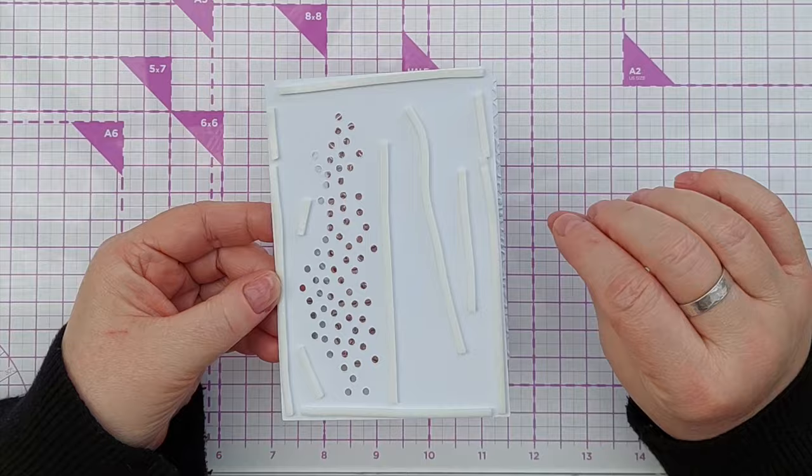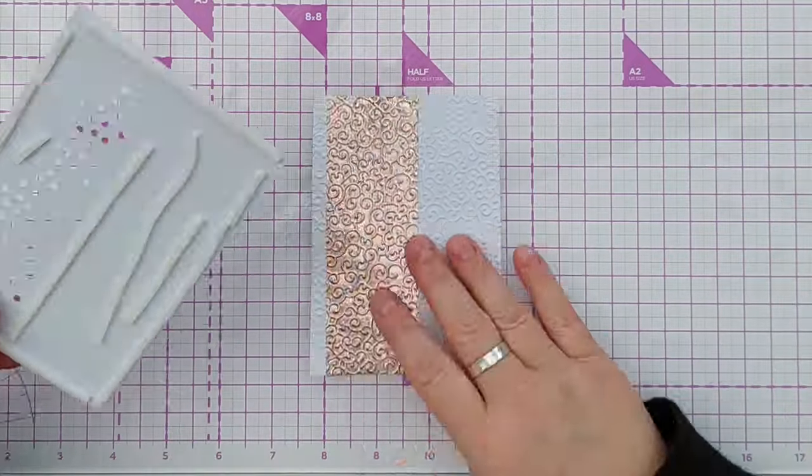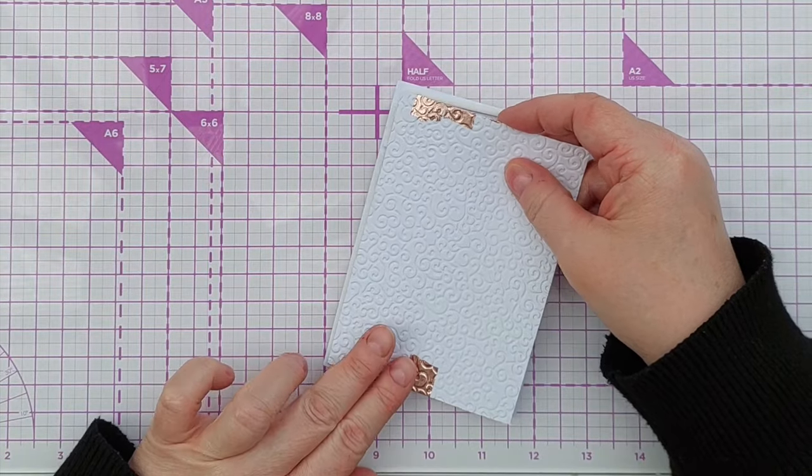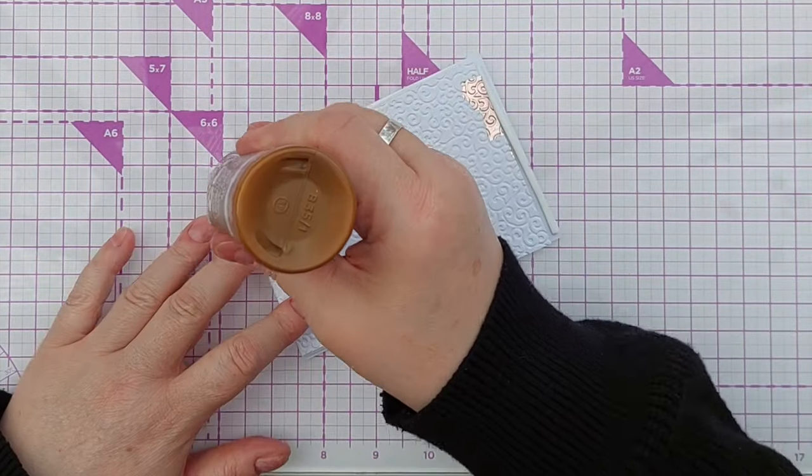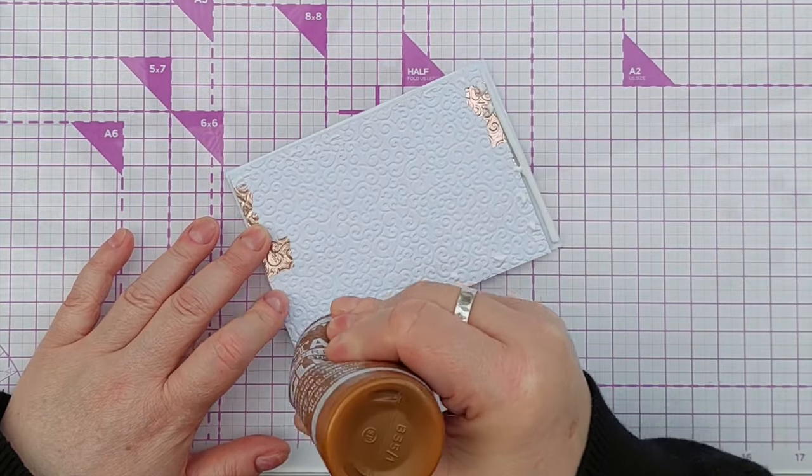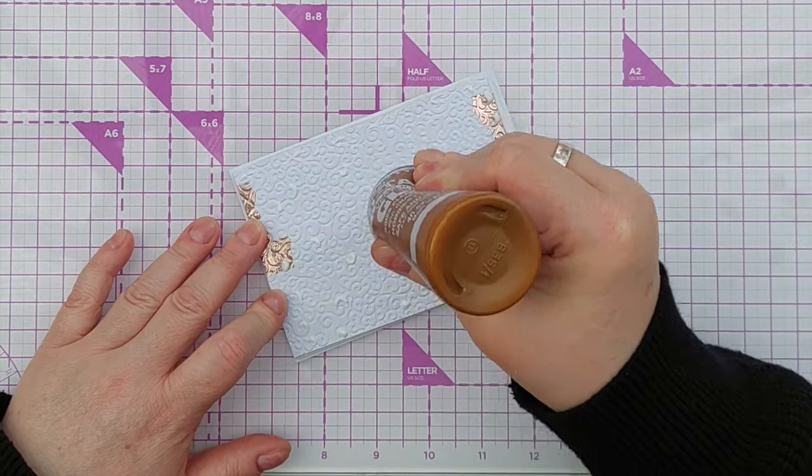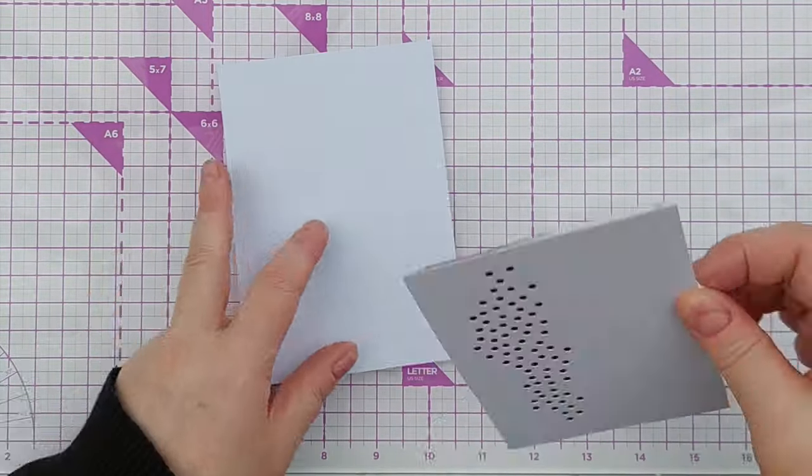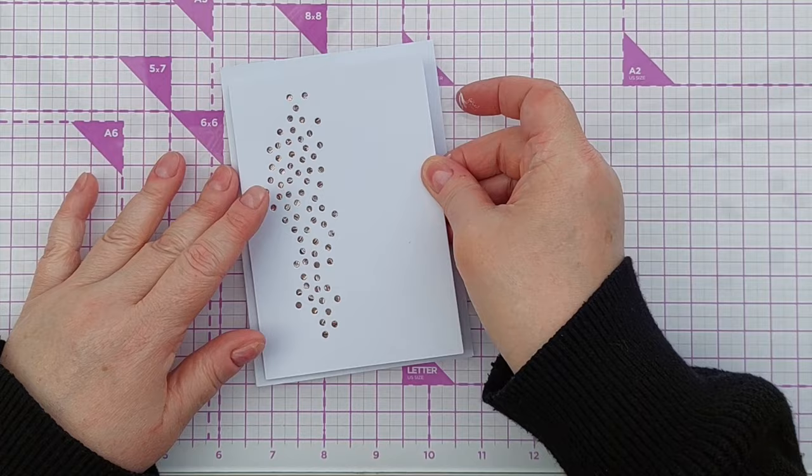I've removed the release paper from all the foam tape and then all I need to do is pop this on the back and now I'm just going to add, I can get my glue to come out the glue bottle, some glue on the back and attach that to the front of my card.